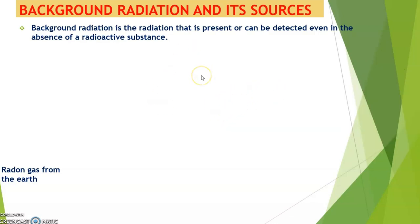Background radiation is the radiation that is present, or can be detected even in absence of a radioactive substance. That is, before a radioactive substance is actually brought into a space, if you place a Geiger counter there, it will actually give you some count. It will show that there are some radiations being radiated, even before a radioactive substance is actually placed there.